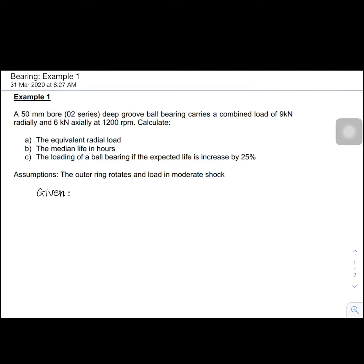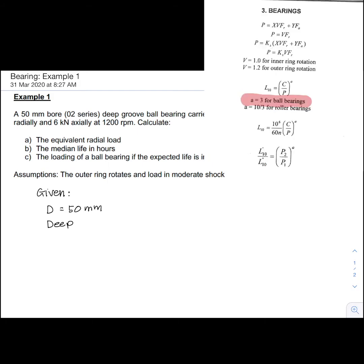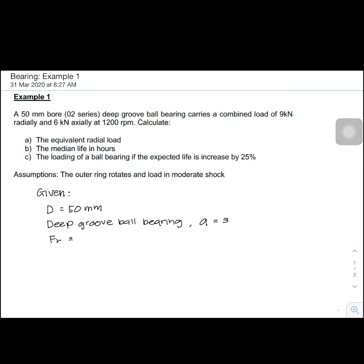List down all the information given. First we have bore diameter, D equal to 50 mm. Second, deep groove ball bearing, which corresponds to a few parameters. One of them is A equal to 3. Then, radial load FR equal to 9 kN.